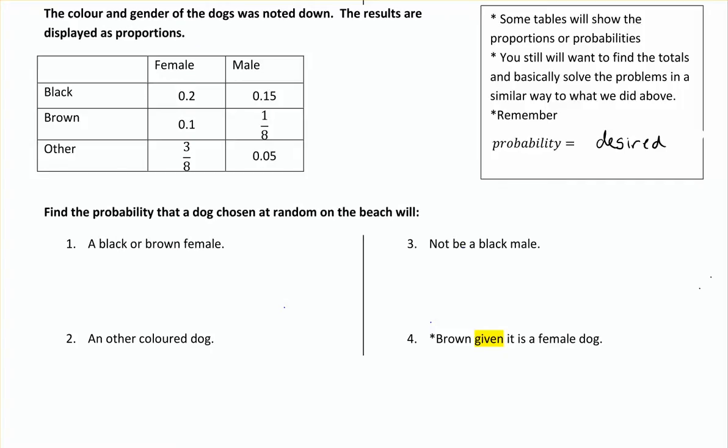Looking at another example of a table for probability, here the numbers in the table are actually the proportions, or basically the probability. So I'm not giving you the individual number of dogs that fall into each category — I'm giving you the proportions; they've already calculated the probability. You still want to find the totals, because they can be helpful, and solve problems similarly to before. Because it's already giving us the probabilities, we don't have to write it as a fraction — the fraction part kind of goes away.